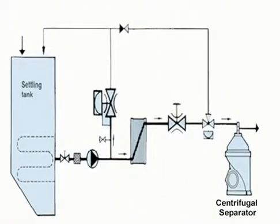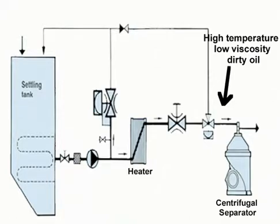Before entering the centrifugal separator, the dirty oil passes through the heater, which reduces its viscosity by increasing the temperature. The lower the viscosity, the easier it is to remove impurities from the dirty oil.